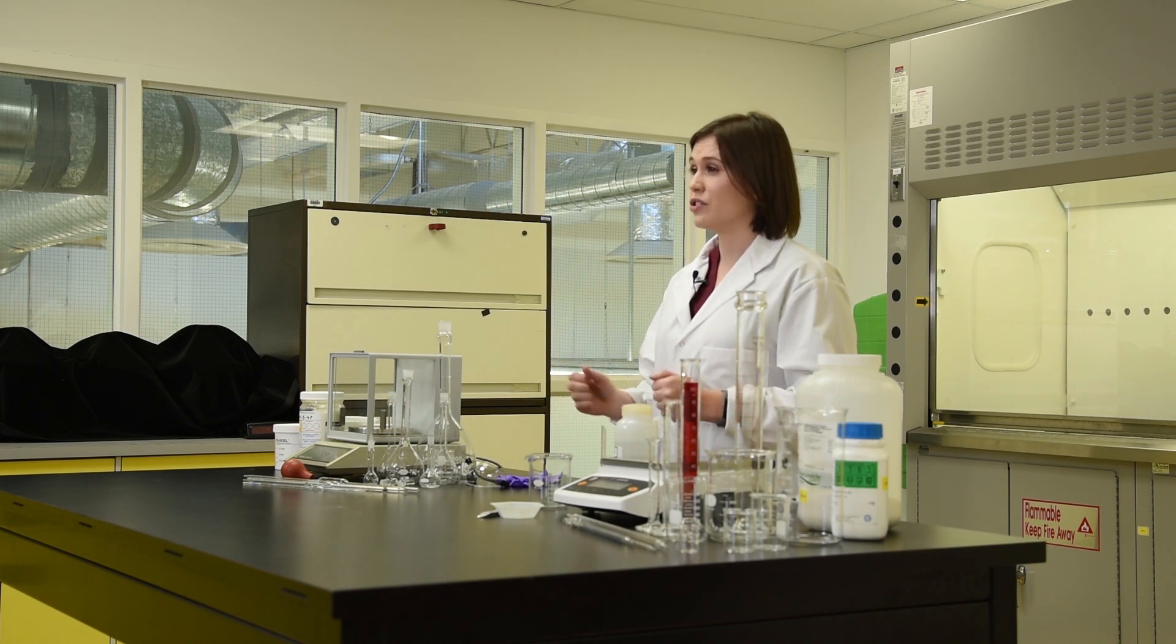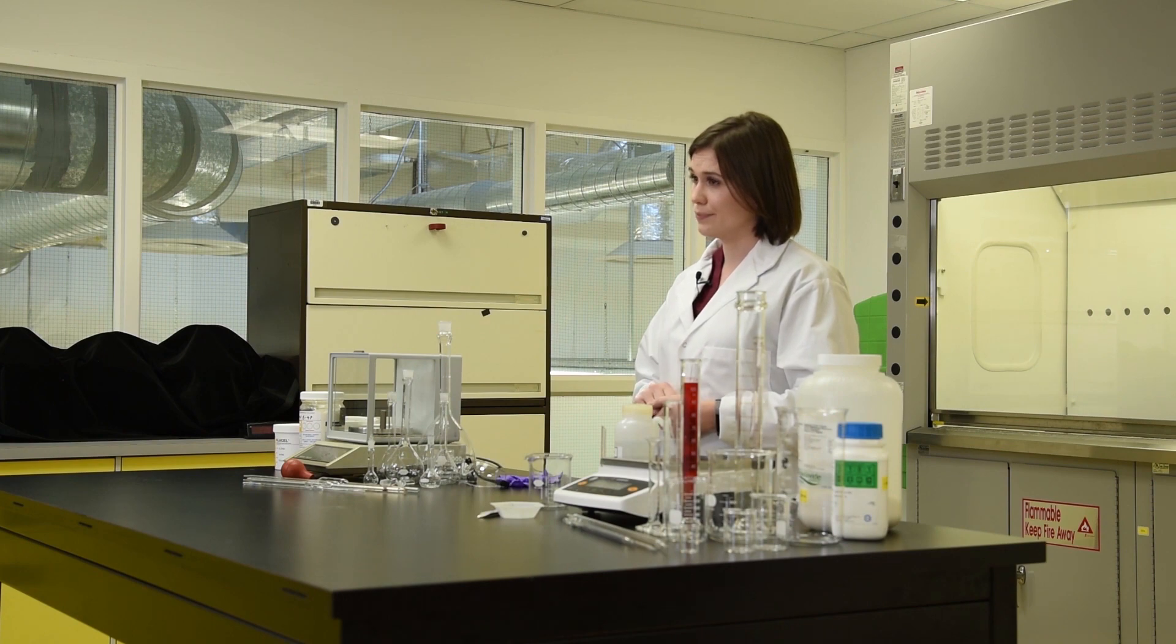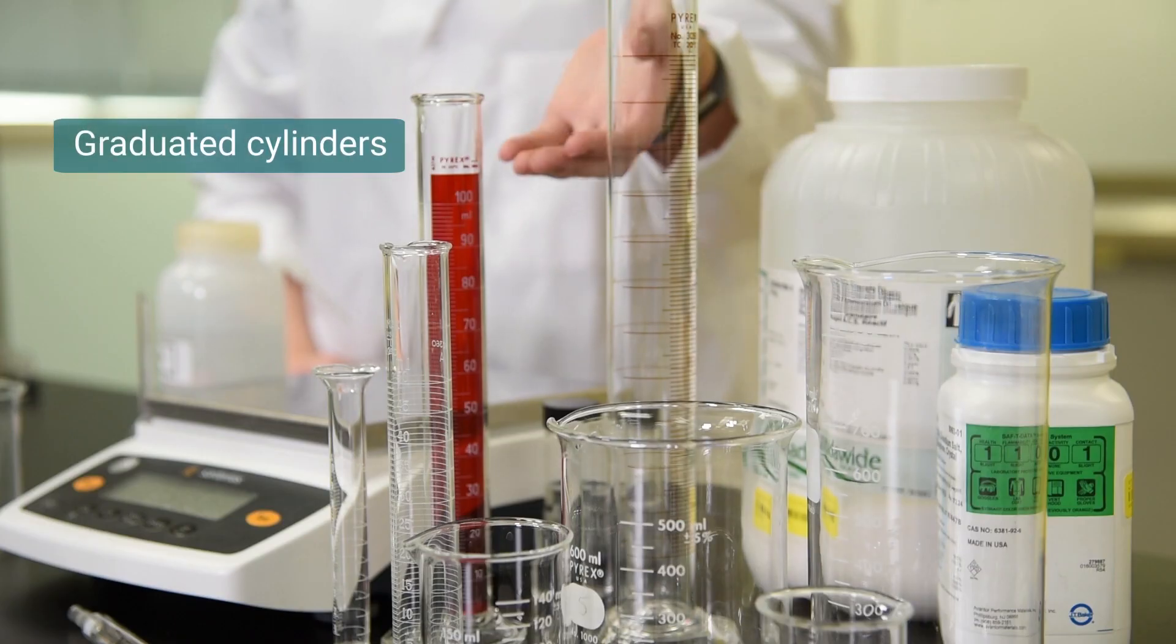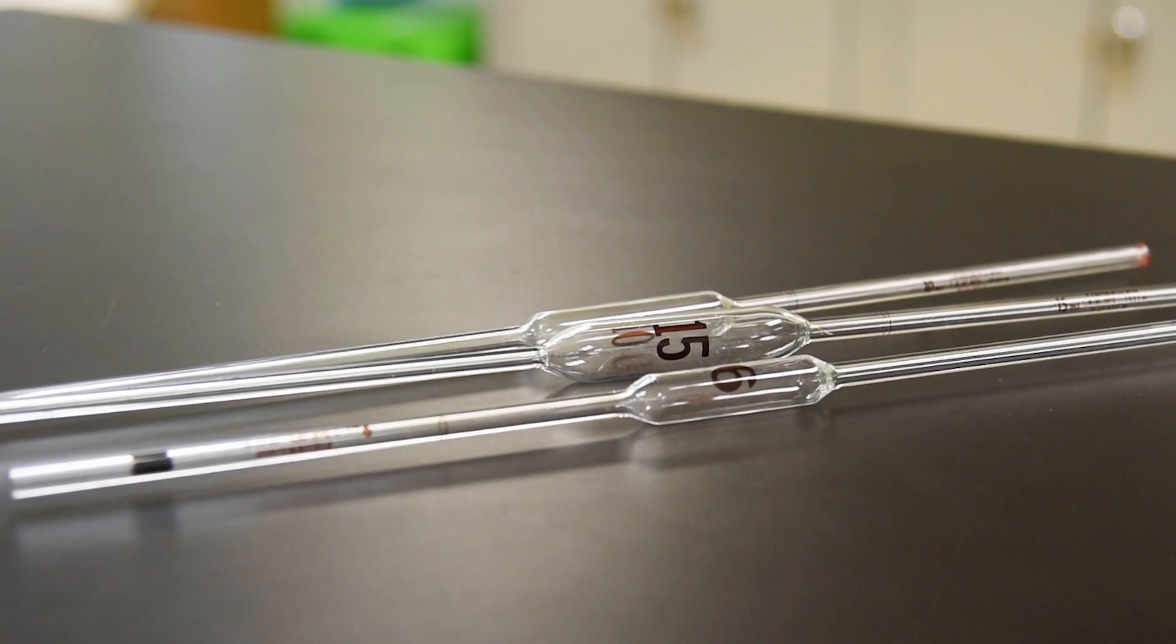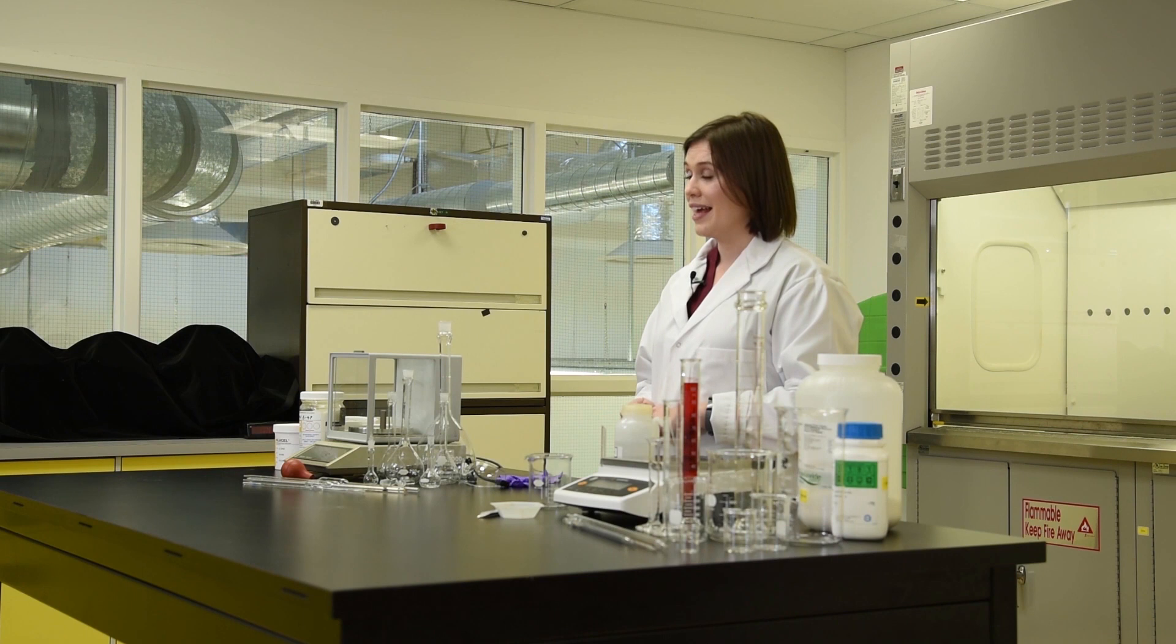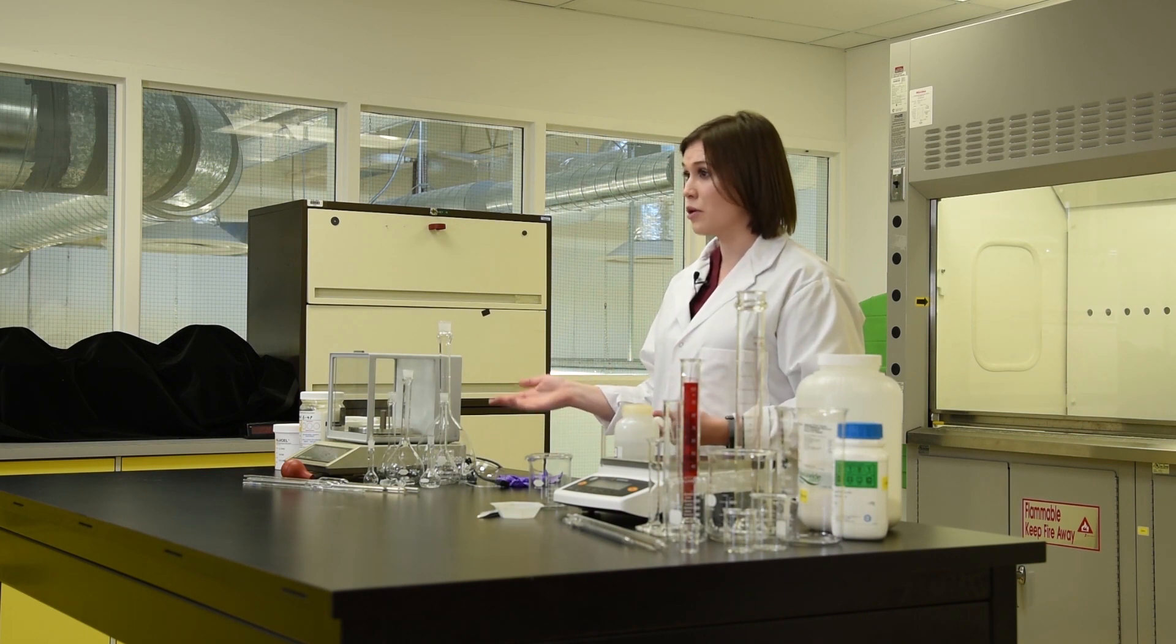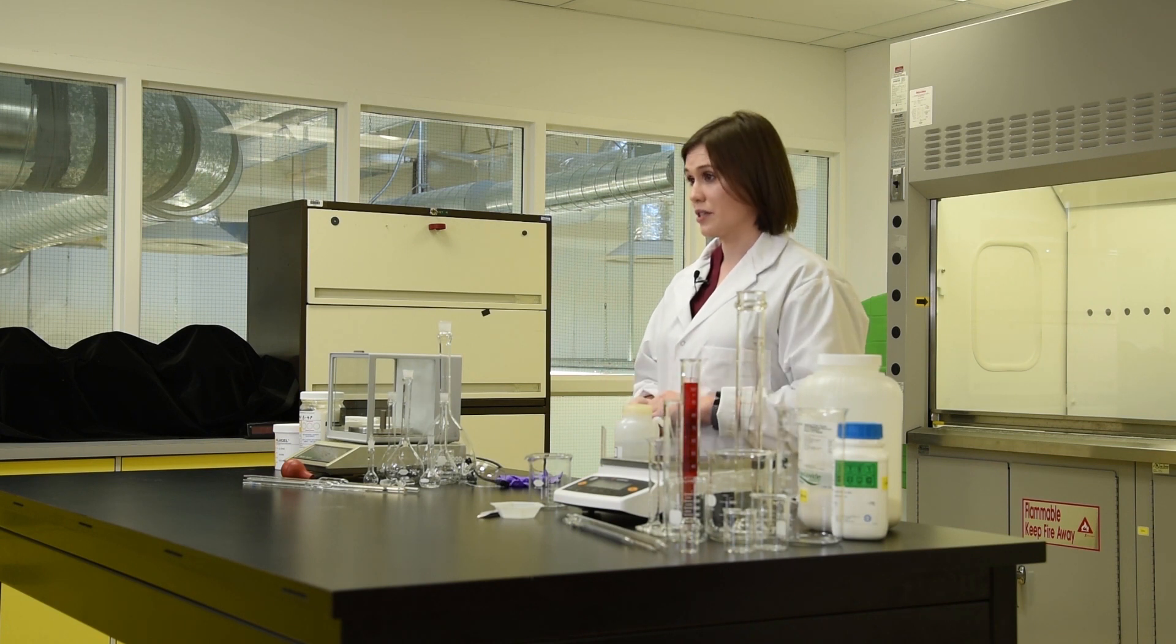It's also important to select the proper glassware. Beakers, graduated cylinders, graduated pipettes, volumetric flasks, and volumetric pipettes are all examples of common glassware found in conservation labs. As a general rule, volumetric glassware is the most precise for measuring volumes of liquids, whereas beakers are the least precise.